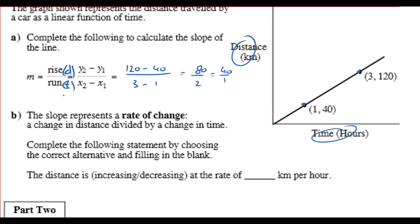So, the distance is increasing at a rate of 40 kilometers per 1 hour. That is a rate of change, meaning for every hour, you go 40 kilometers.